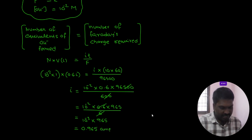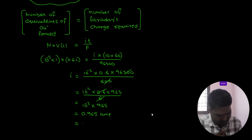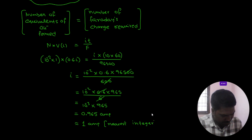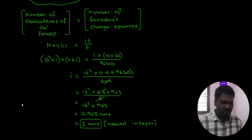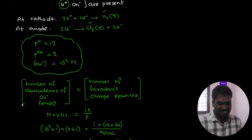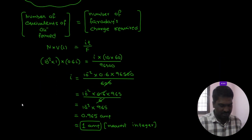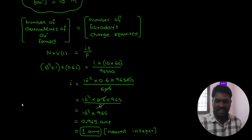So the nearest integer value of 0.965 is 1 ampere. The answer is 1. This is an integer-type question from JEE Main 2025 Phase 1. I hope everyone understood the solution. Thank you so much.